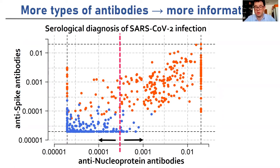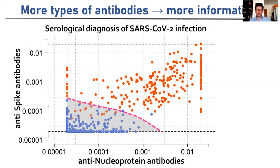We can do the same thing for classification with the nucleoprotein. Again, if you're below the cutoff, you're negative; above it, you're positive. But what if we want to use both of these measurements together? In this instance, instead of drawing one straight line, we essentially need to draw some sort of curve or decision surface and then use that to classify.